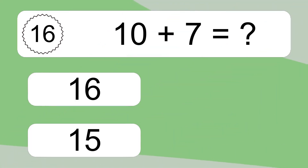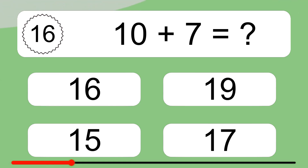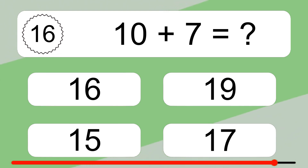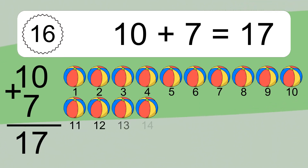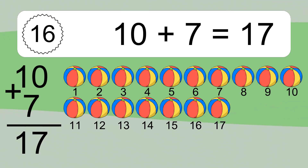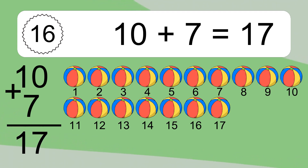10 plus 7 equals what? 10 plus 7 equals 17. Let's count it. 1, 2, 3, 4, 5, 6, 7, 8, 9, 10, 11, 12, 13, 14, 15, 16, 17.